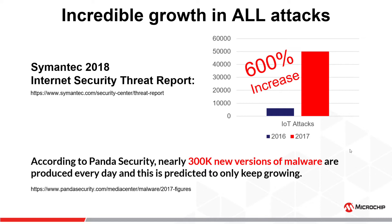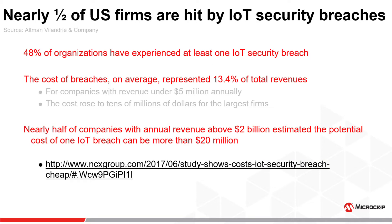Symantec's 2018 Internet Security Threat Report underscored an increase of 600% in IoT attacks. Panda Security reports nearly 300,000 new versions of malware are produced every single day. 48% of U.S. firms have experienced an IoT breach, and that number is expected to grow — it's probably well over 50% by the time you hear this. The costs to those firms averaged about 13% of total revenue.